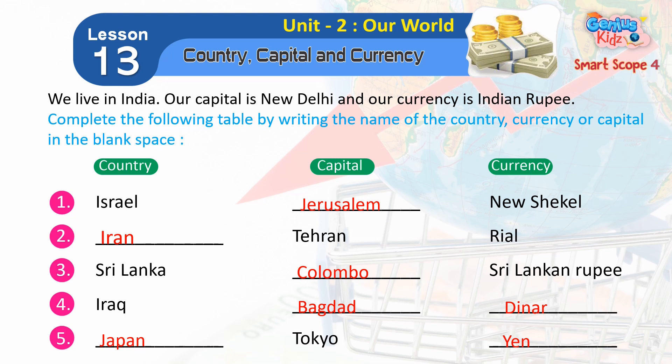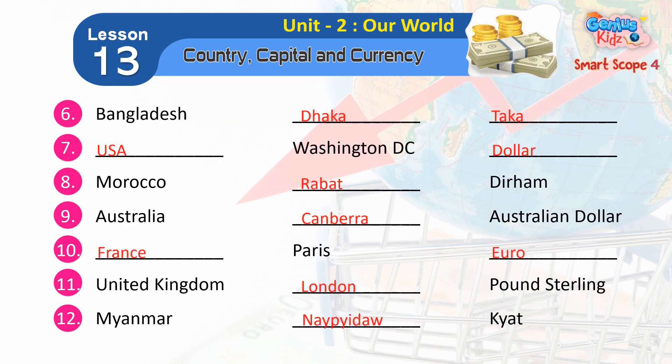5. Japan — Tokyo — Yen. 6. Bangladesh — Dhaka — Taka.